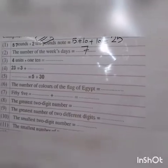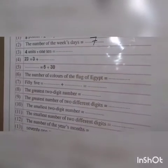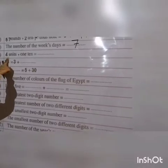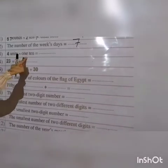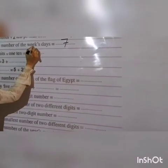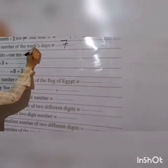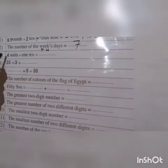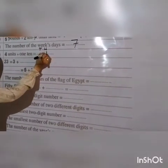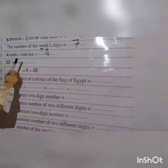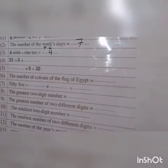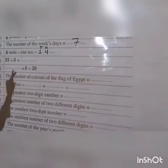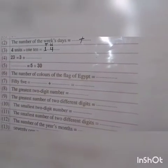Number three: four units and one ten. We have two place values — units and tens. Four units, so put four here. And one ten, meaning one in the tens. The number will be 14.